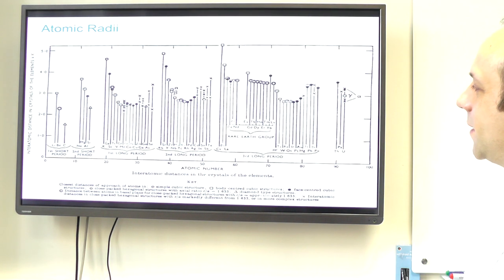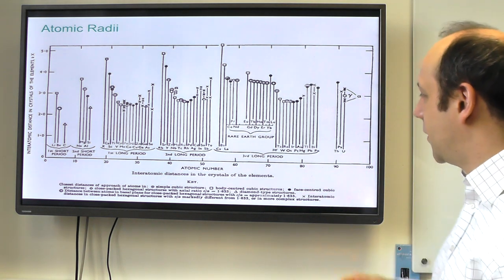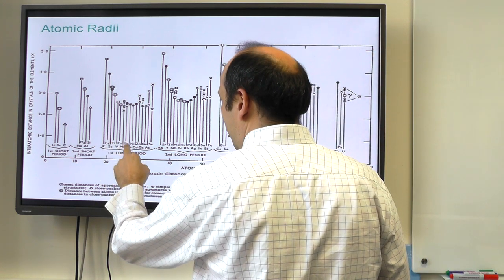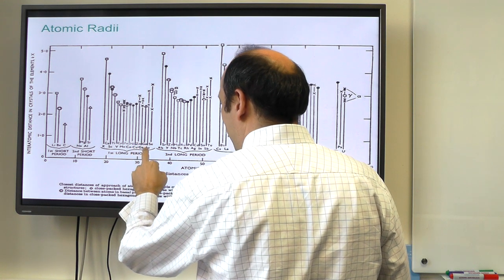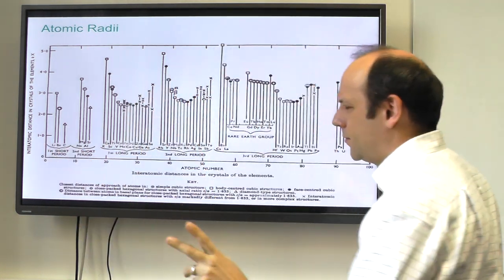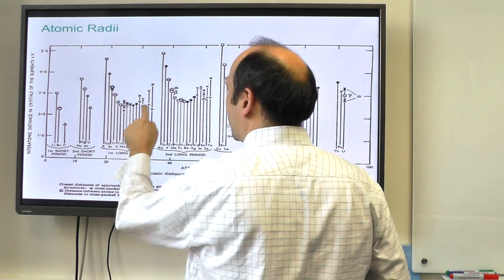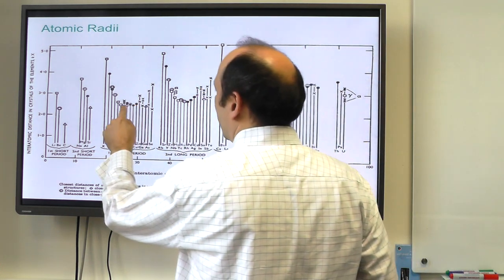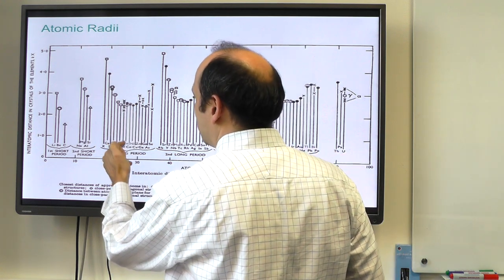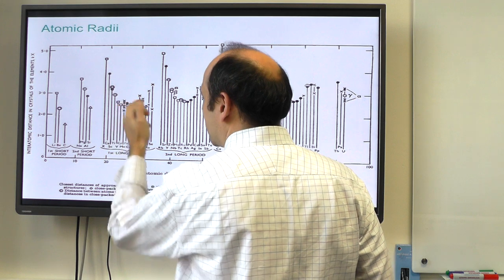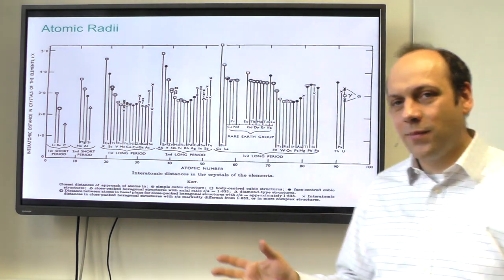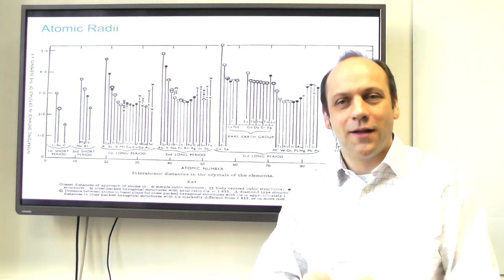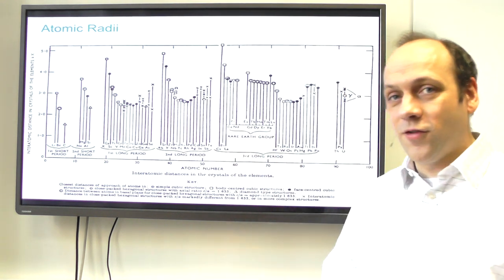Here's a chart showing atomic radii for the different long periods. You go calcium, scandium, titanium, vanadium, chromium, manganese, iron, cobalt, nickel, copper, zinc, gallium, germanium, arsenic, selenium — and they tend to follow a trend as you go across. The middle of the transition element block contains the smallest atoms. The interatomic radius is based on taking the lattice parameter of the solid and, assuming a hard sphere model, working out what the interatomic radius would be.